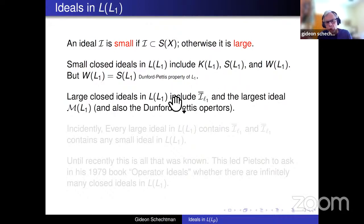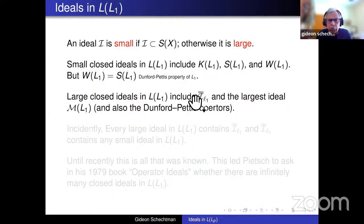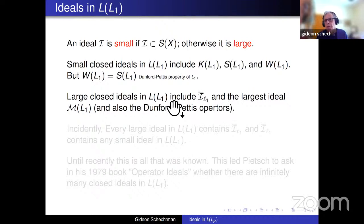Large ideals include: the operators which factor through the identity of little l1, and the maximal ideal of Lp-singular operators. These are large ideals: for instance, the first one includes isomorphisms on little l1, so it is not strictly singular. There is also the Dunford-Pettis operators, which I won't enter into. So all together there were five known proper ideals — besides zero and all of L(L1) — known until about five years ago.